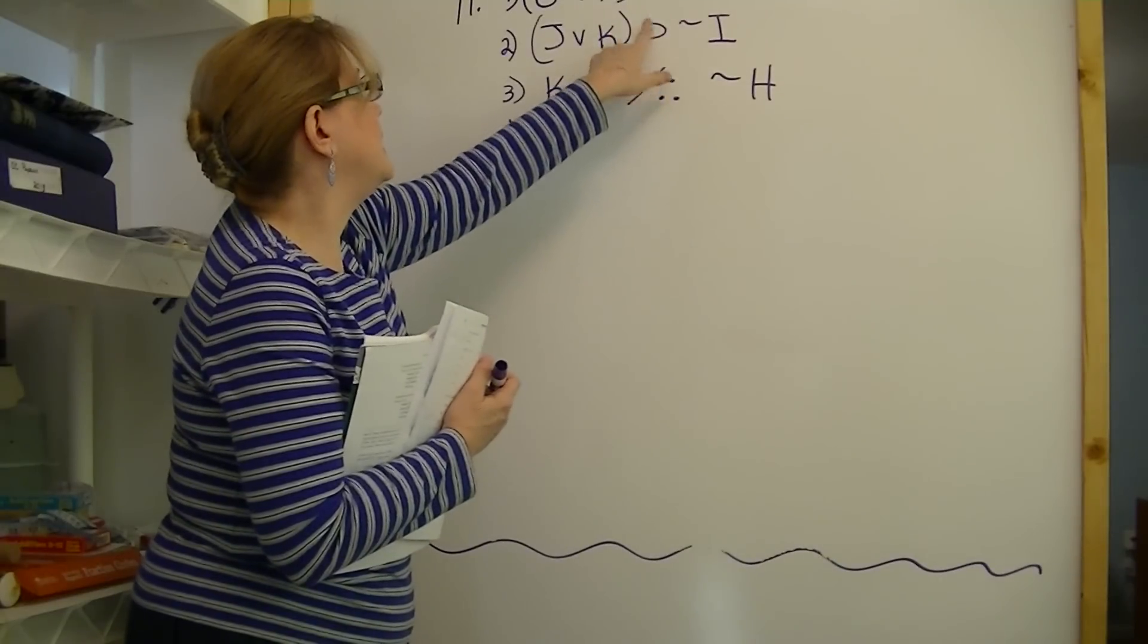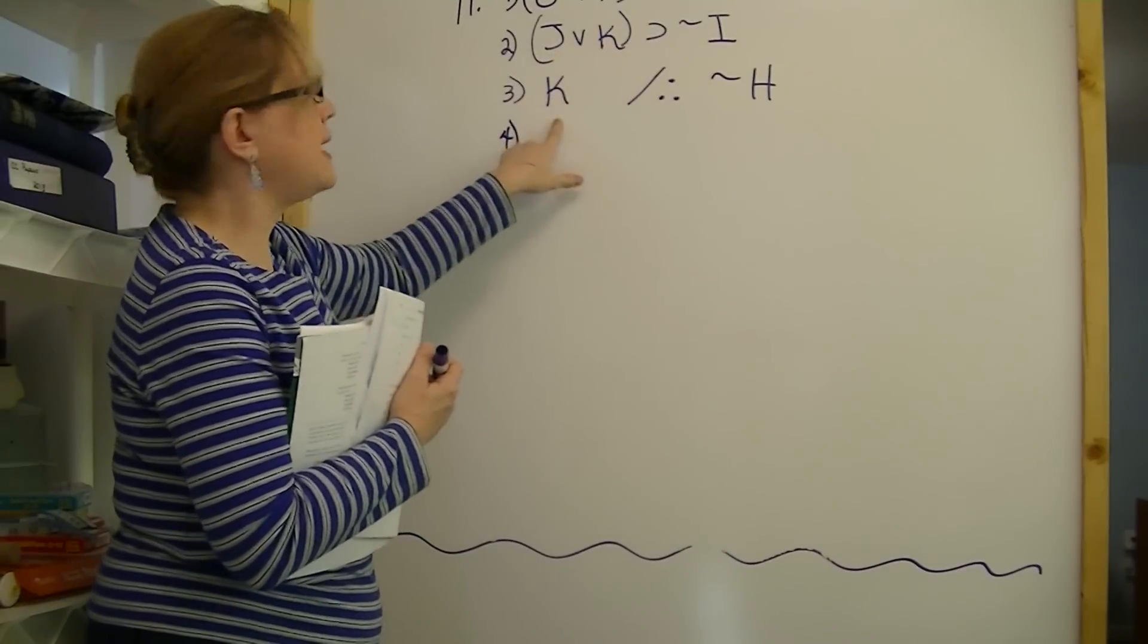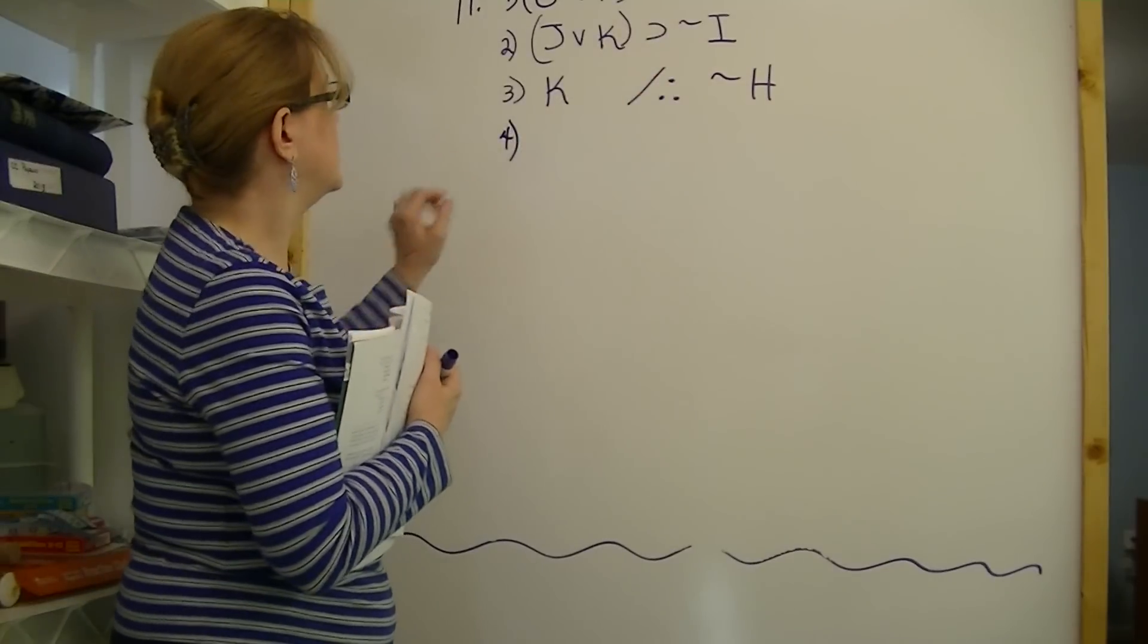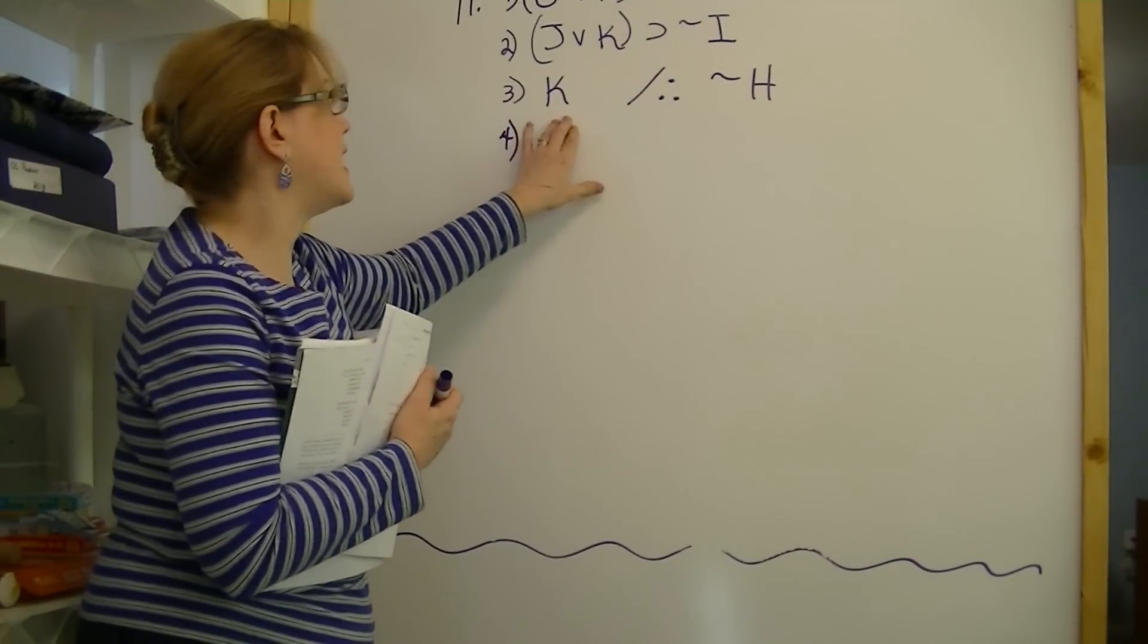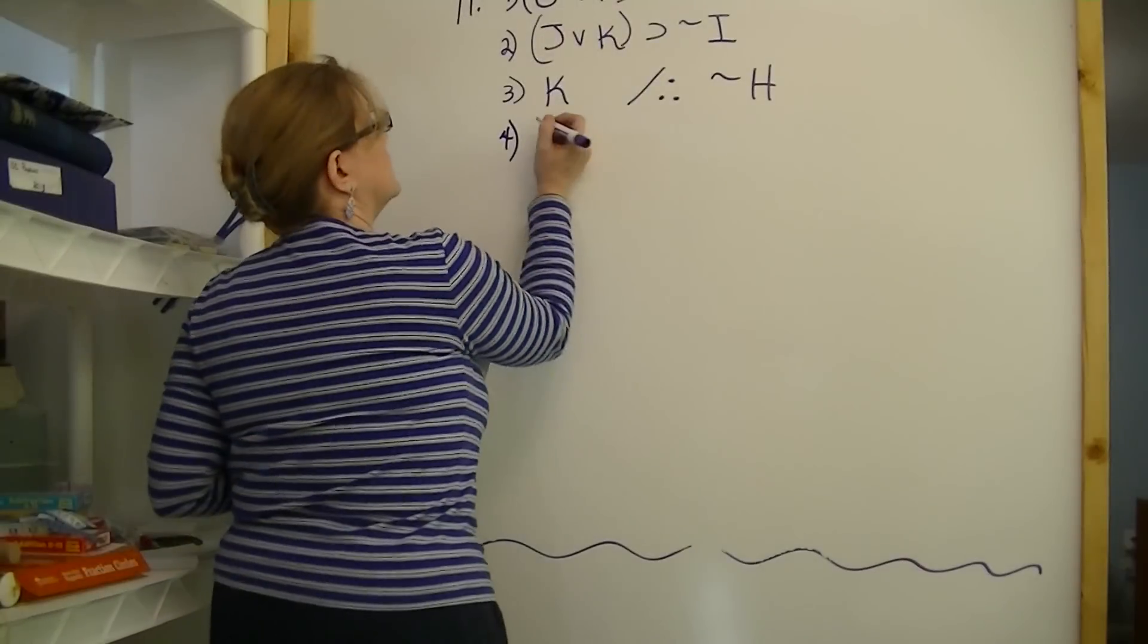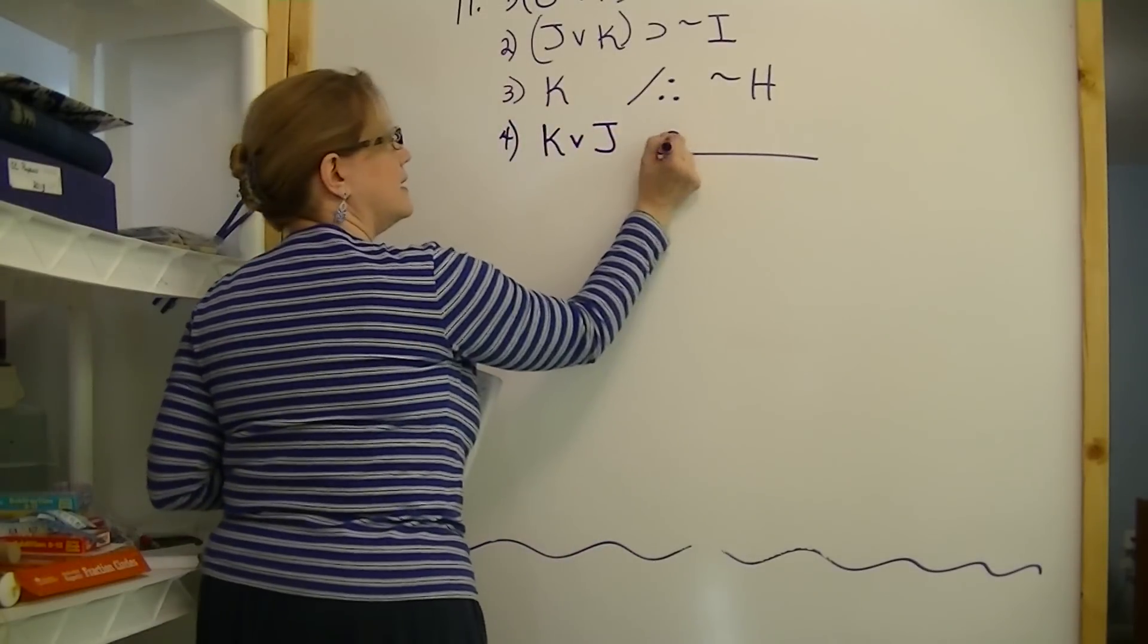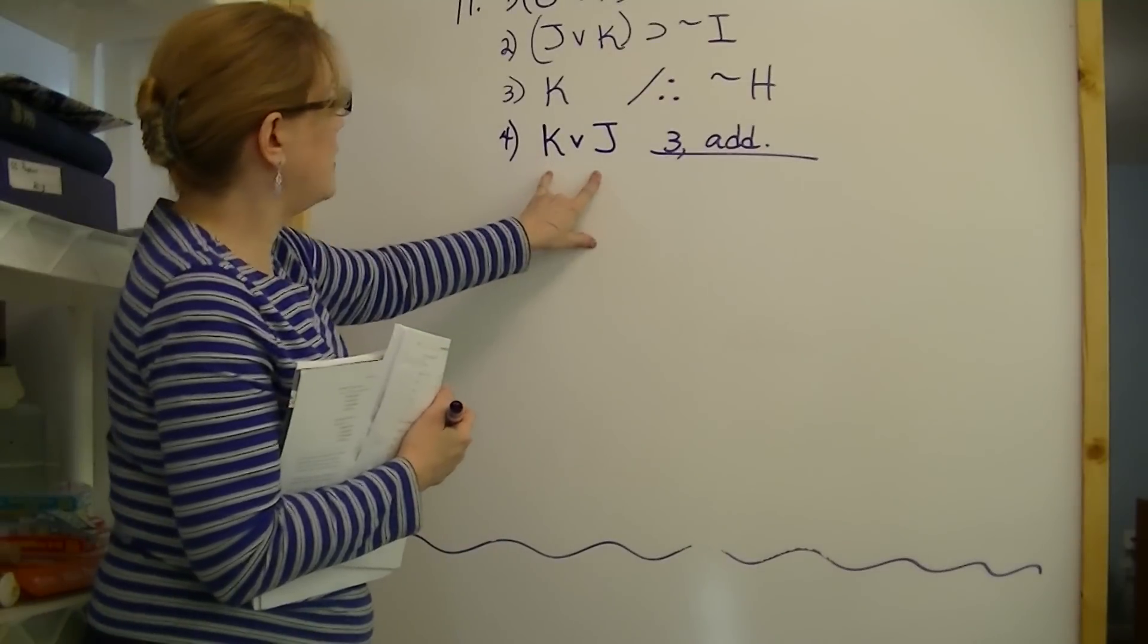We've got a lot of work to do to get to not H. We don't have any way to assert these yet, but we could, we do have a K. So we have something to work with. We have J or K, and here's a K. If J or K, then not I. But we don't have the J here, so that's something we can do. We can work with that. Let's take the K and just add a J. K or J. And that's using line three addition.